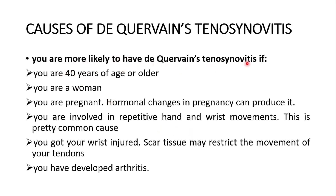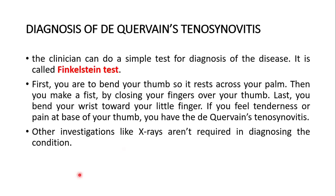You are more likely to have De Quervain's tenosynovitis if you are 40 years of age or older, you are a woman, you are pregnant — as hormonal changes in pregnancy can contribute — you are involved in repetitive hand and wrist movements, your wrist has been injured, scar tissue may restrict the movement of your tendons, or you have developed arthritis.